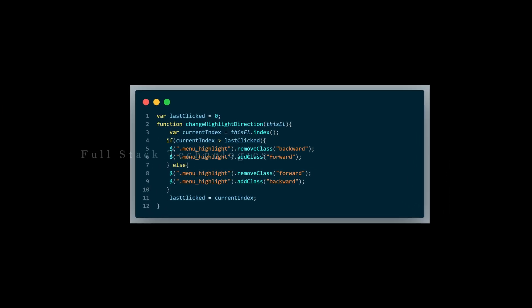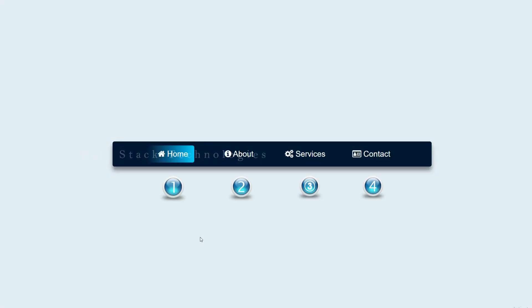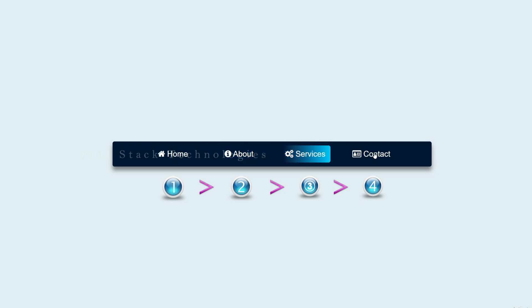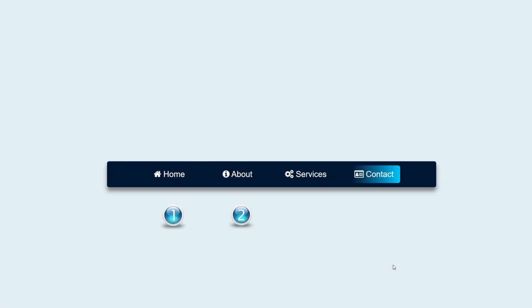This method executes each time when you click on a menu item. Here we are storing the index of the previous selection and comparing it with the current one. If the current index is greater than the last index, append the class 'forward'. If the current index is lesser than the last index, append the class 'backward'.